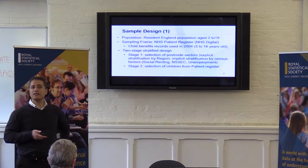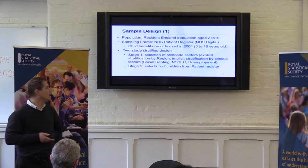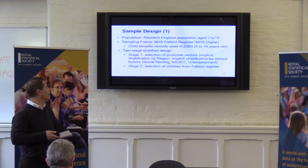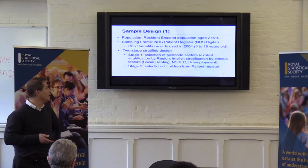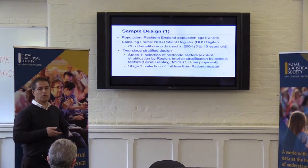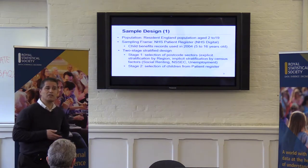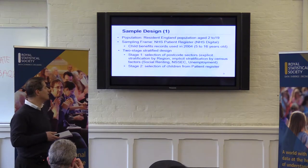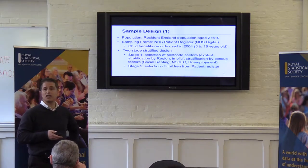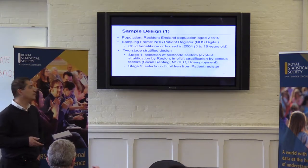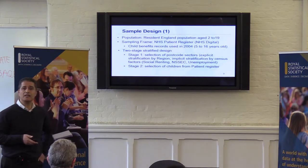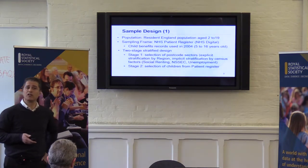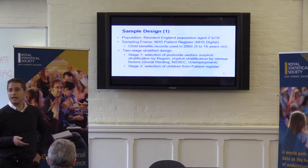In terms of design, it happened in two stages. In the first stage, we selected postcode sectors. We have at ONS a list of all postcode sectors, which is linked to census information. So we have, for each postcode sector, the percentage of households that rent socially, the percentage of people who are unemployed, and so on. We used this information to stratify the list of postcode sectors, with explicit stratification by region and implicit stratification by the census factors.